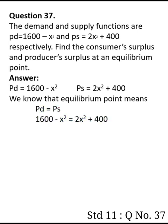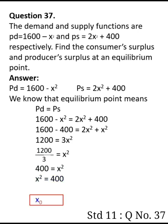So 1600 minus x square equals 2x square plus 400. Moving x square to the same side and subtracting 400, we get 1200 equals 3x square. Therefore 1200 divided by 3 equals x square, so x square equals 400, and x naught equals 20.